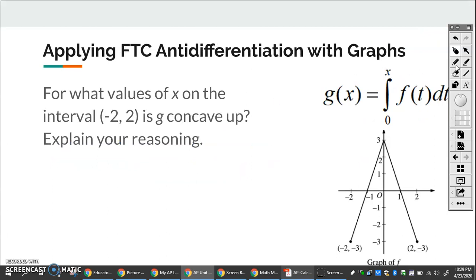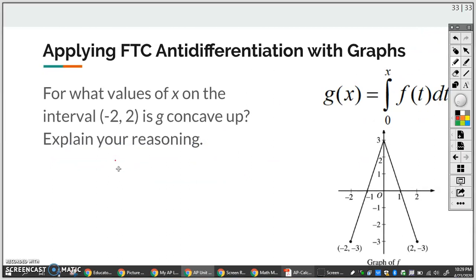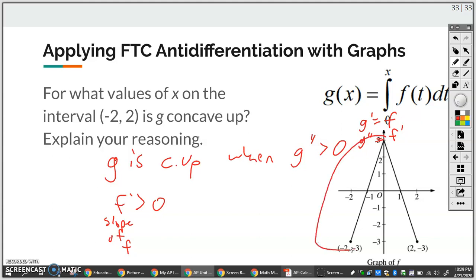If I want to know when G is concave up, then I'm asking, G is concave up when the second derivative is positive. And if G is the integral, then G prime is F and G double prime is F prime. So G double prime is greater than zero when F prime is greater than zero. F prime means the slope of the tangent of F. So when is the slope of F, or the slope of the tangent line, positive? So this slope is positive. So between negative two and zero.